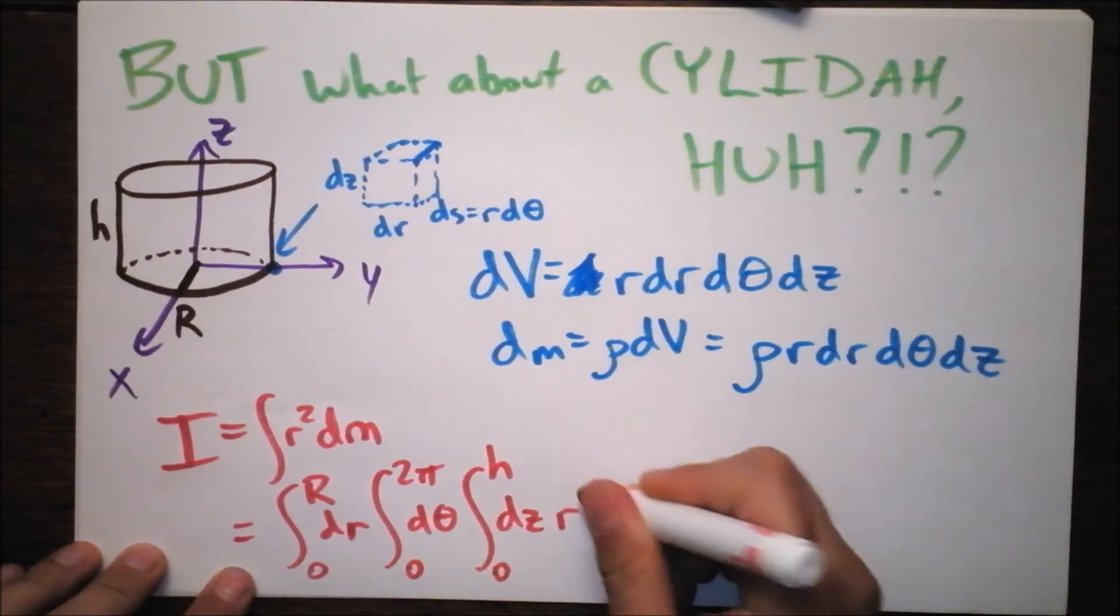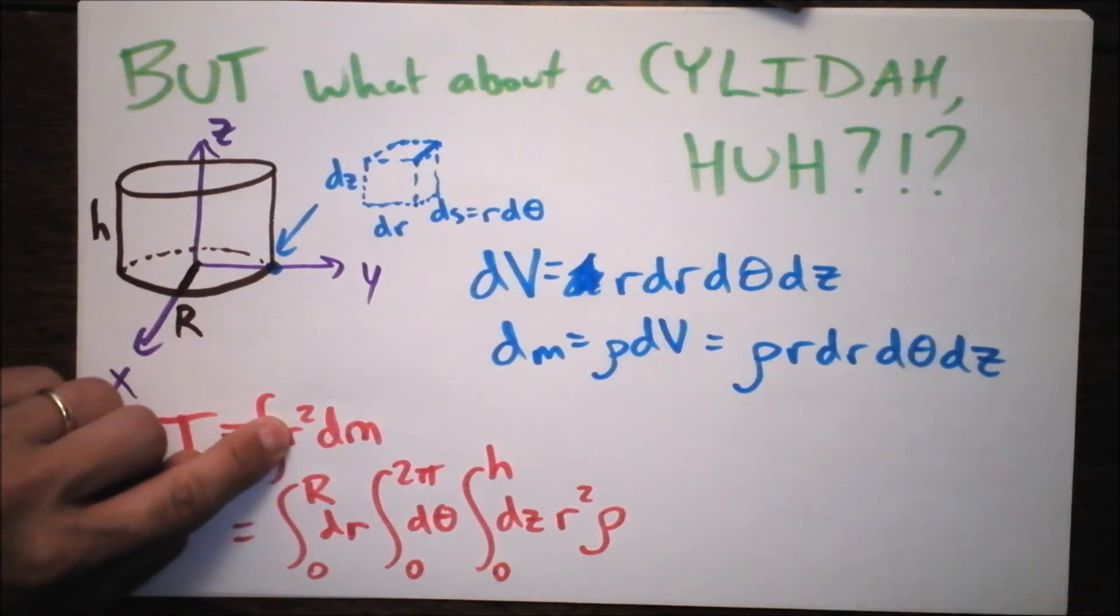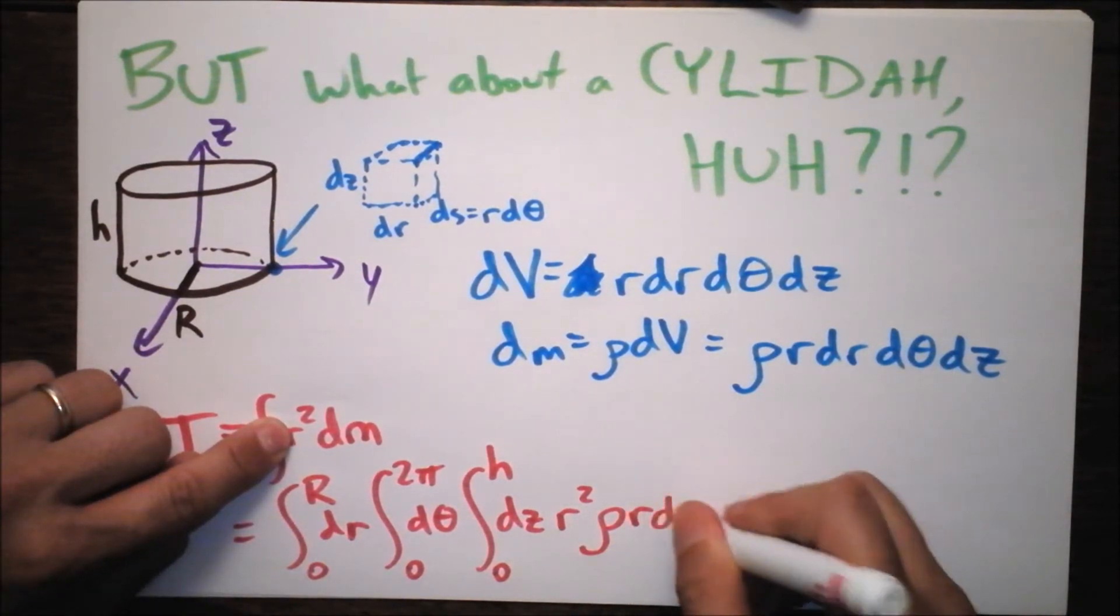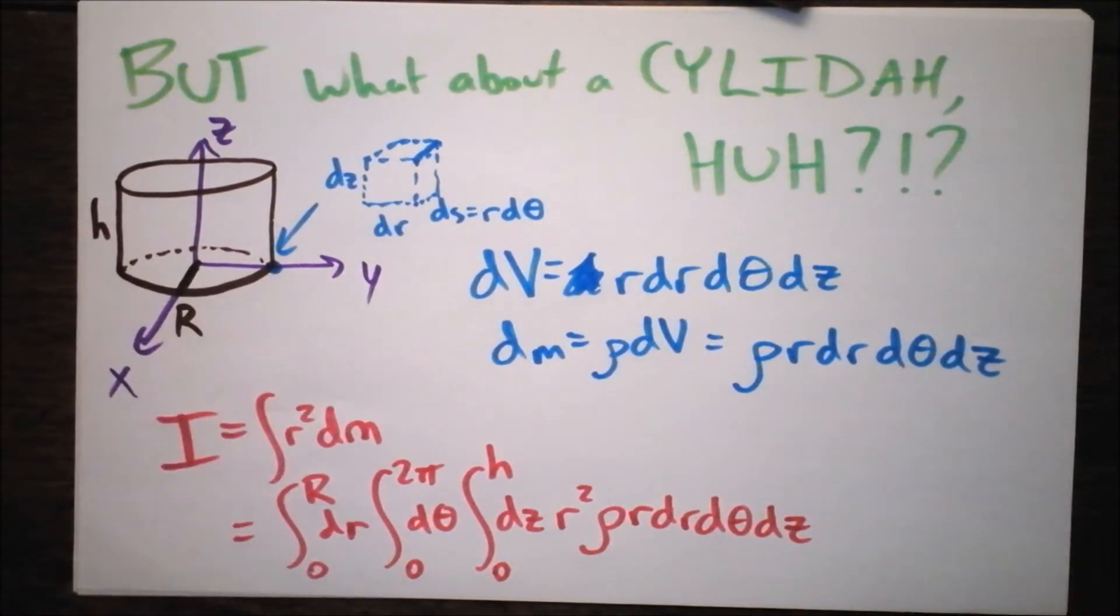And what integral are we performing? Well, I'll tell you. It's R squared times rho. Wait a second. That R squared came from that right there. And now, I have to write DM, which is rho times R times DR times D theta times DZ. Just try to pronounce that. It looks Hungarian, maybe. And then, we'll have to go to the next page.